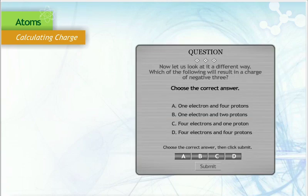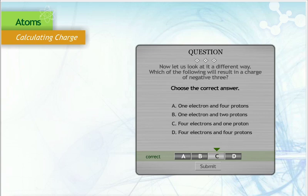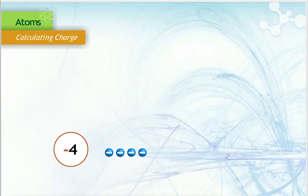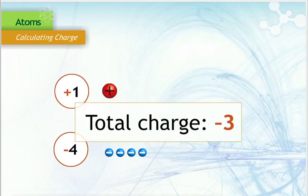Now let us look at it a different way. Which of the following is an atom with a charge of negative 3? Very good! The correct answer is C, 4 electrons and 1 proton. 4 negative charges plus 1 positive charge equals 3 negative charges.